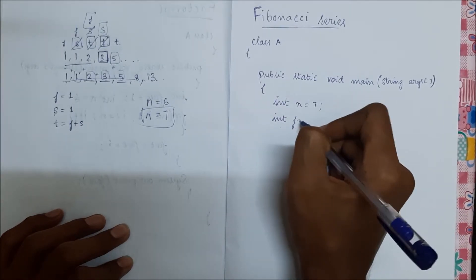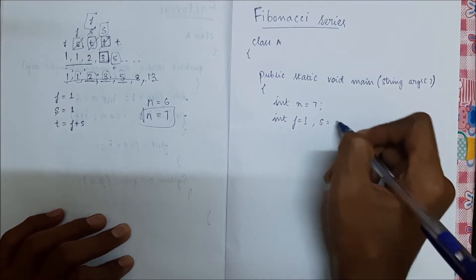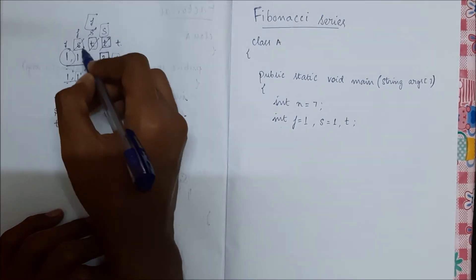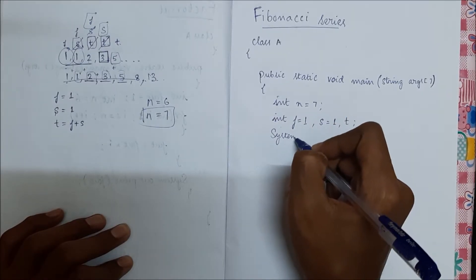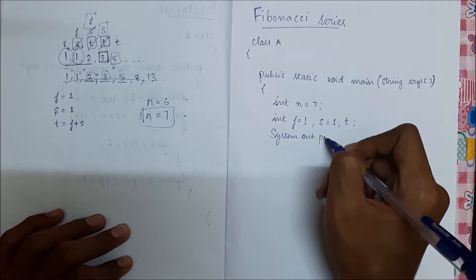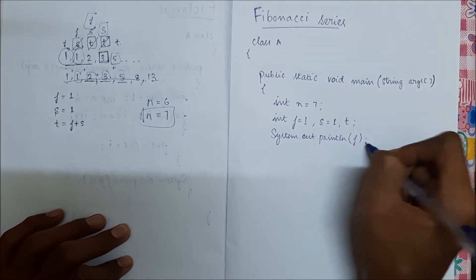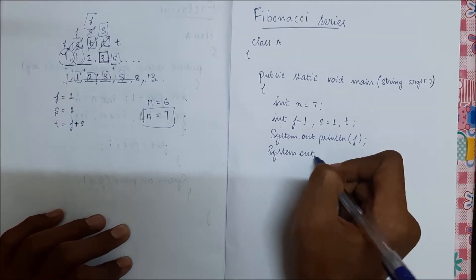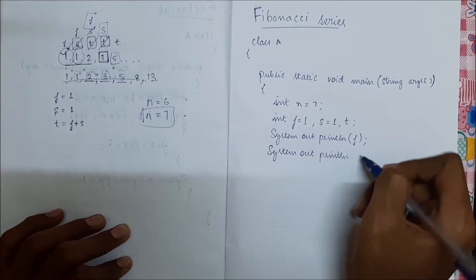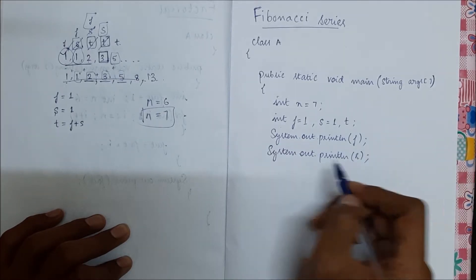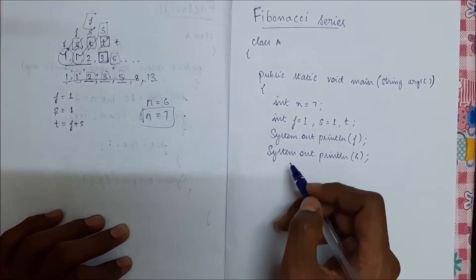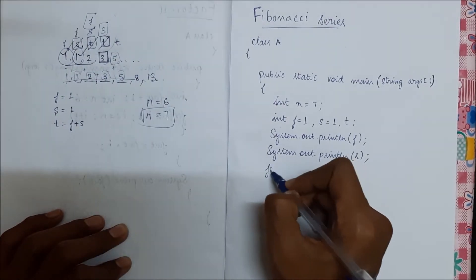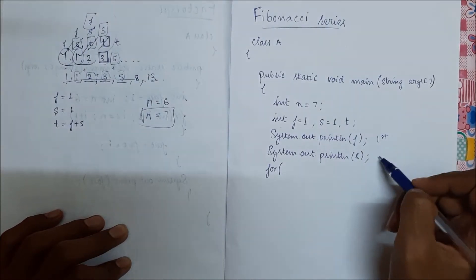We declare int f equal to one, s equal to one, and t as nothing. I'm going to print the first and second terms using System.out.println(f) and System.out.println(s), which will print one and one. Now I have to print from the third term onward, so let us use a for loop since we have already printed the first and second terms.